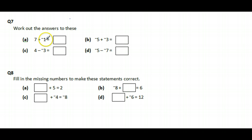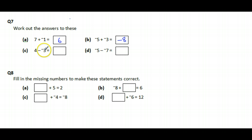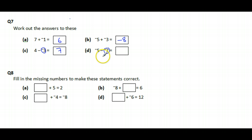So 7 + (−1) means I'm adding a sandbag and go down to six. If I'm on −5 and add three more sandbags, I go down to minus eight. For 4 − (−3), I take away three sandbags and float up to seven. For −5 − (−7), I take away seven sandbags and float up seven spots to plus two.